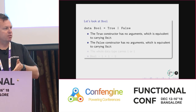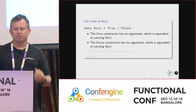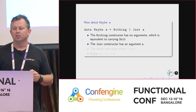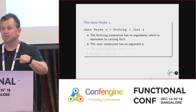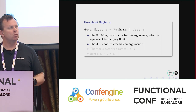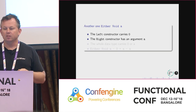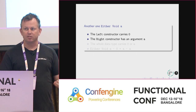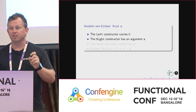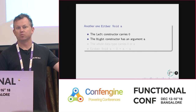Bool is true or false — it's the same as carrying Unit in each constructor, which means it's one plus one: it's two. Maybe is a unit plus A — Nothing carries Unit and Just carries A, so it carries one plus A inhabitants. If A were Bool (two), Maybe Bool has three values. Either Void or A: the left carries zero and the right carries A, so zero plus A is A. You can't construct a Void, so Either Void A is isomorphic to A. And Void times A is zero — a pair where one element is Void is impossible.